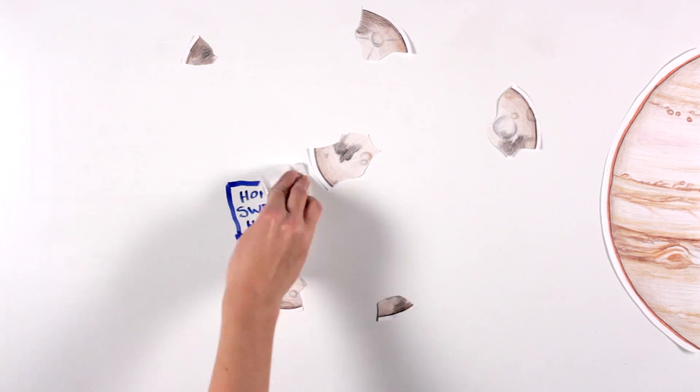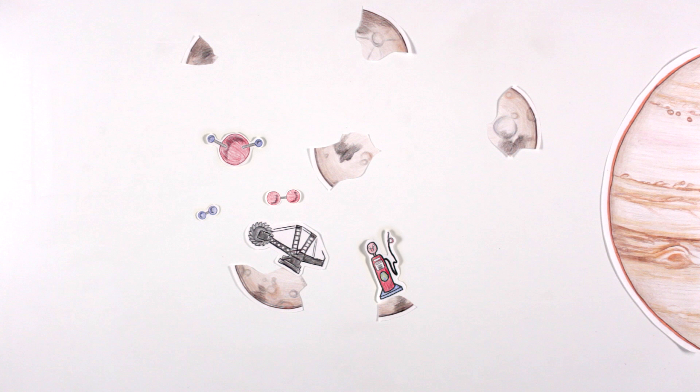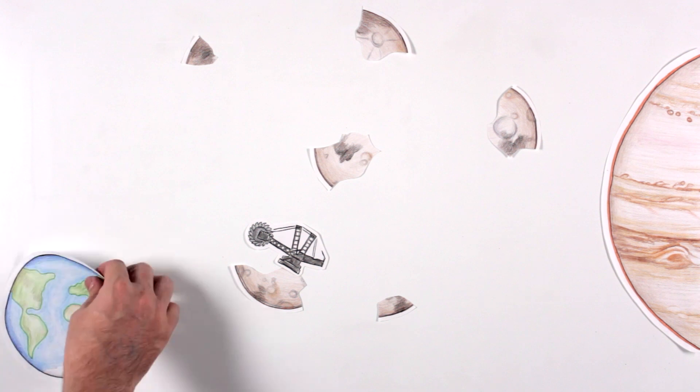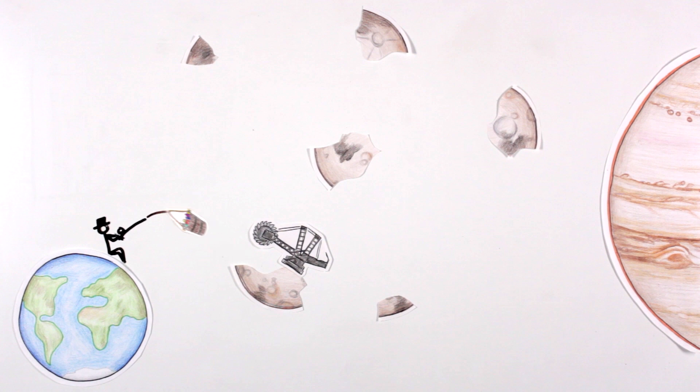Asteroids might be large dead rocks hard to live on, but they do hold promise as sites for mining precious metals and other elements. Some might hold hydrogen and oxygen that can be used for water and fuel needed for exploration and mining. Scientists and engineers are beginning to make plans to mine asteroids for these resources to use here on Earth and for outposts in the solar system.